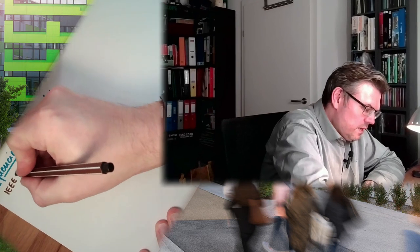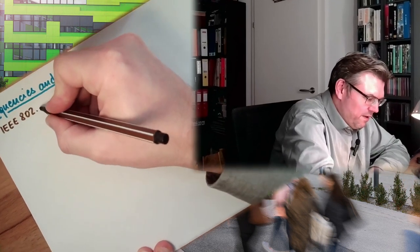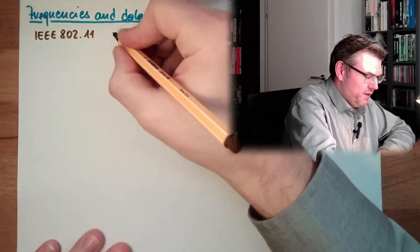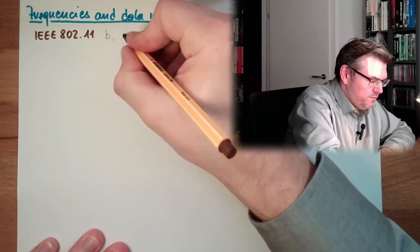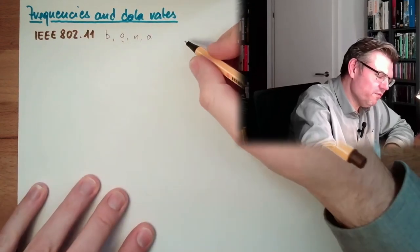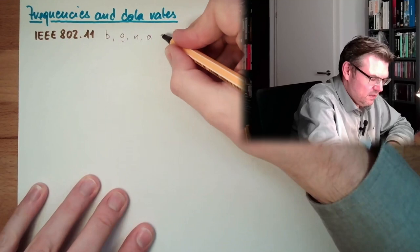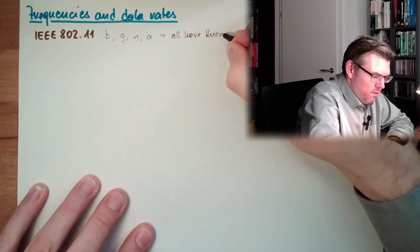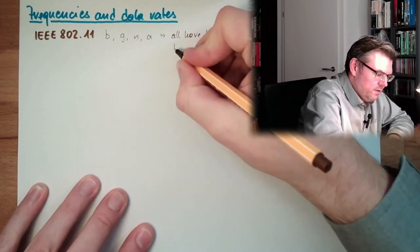The standard for wireless networks is IEEE 802.11, and then we have different variants: we have for instance B, G, N, A, and all of them have theoretical data rates.